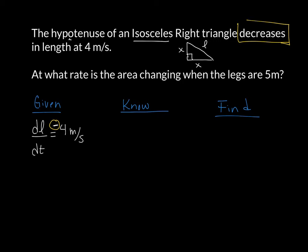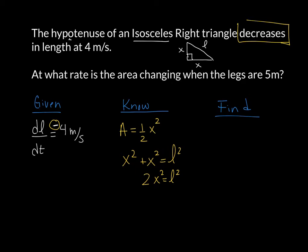We know we're talking about area. The area of a triangle is one half base times height, which in this case is one half x squared, since the base and height are both x. The other thing I know and will use here is the Pythagorean theorem: x squared plus x squared equals L squared, or 2x squared equals L squared. We're looking for dA/dt — the rate at which the area is changing — when x equals 5 meters.